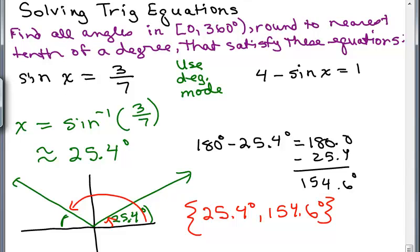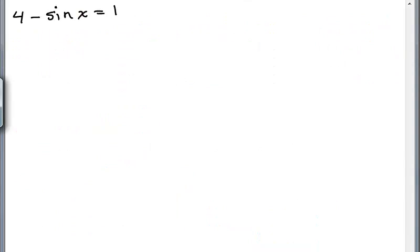4 minus sine of X equals 1. All right. Well, I haven't solved for the sine of X here, so we could do that in different ways. I'm going to subtract 4 from both sides. So that's negative sine of X equals 1 minus 4 is negative 3, and then if I divide both sides by negative 1, then that tells me that the sine of X equals 3.